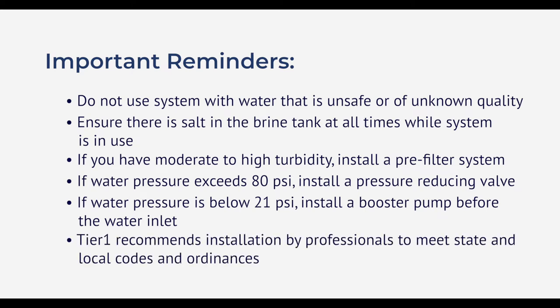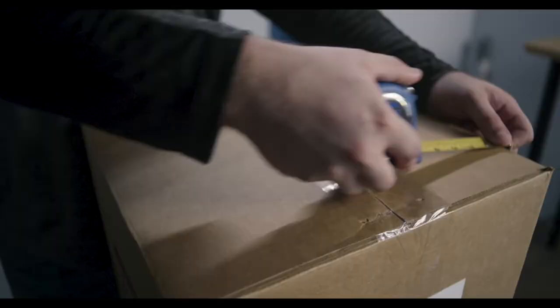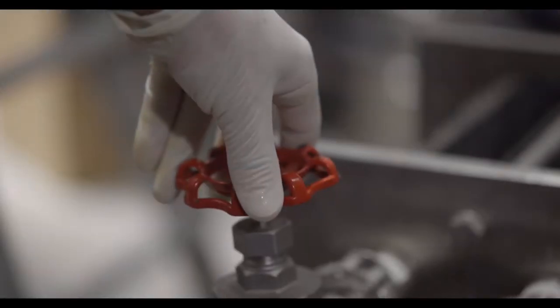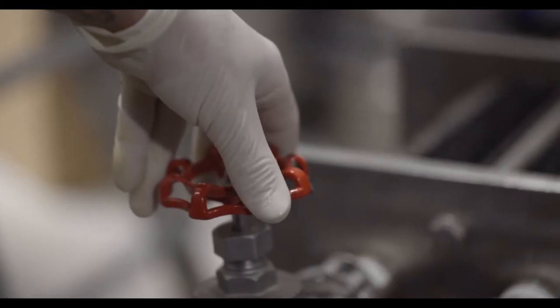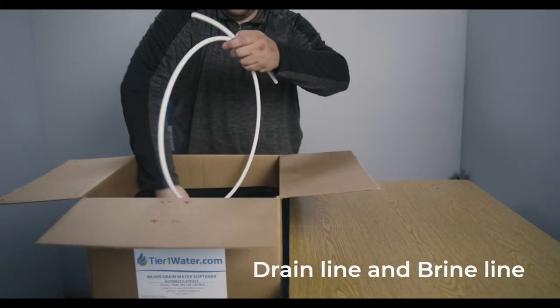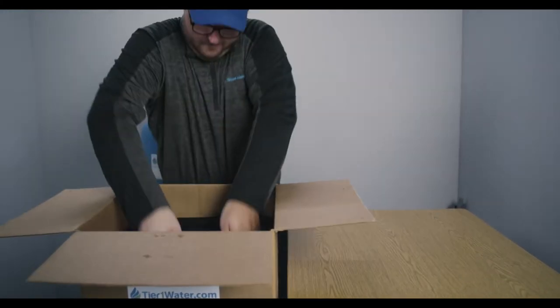All plumbing and electrical work should be performed by an accredited professional to ensure you meet all state and local guidelines. To begin, check that the system will fit in the location selected. Turn off the water source at the inlet to your home. Open the boxes, lay out all the system components, double checking to make sure you have everything.